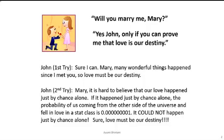So how differently did John try to convince Mary? In his first trial, he tried to prove directly that their love is destiny. In the second trial, he started with: what if their love was not destiny, just happened by chance alone? Then he computed the probability of that happening by chance alone, and said that probability is so small — one in millions — so it cannot happen. That miracle must be their love.